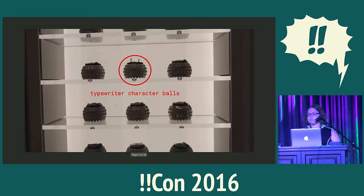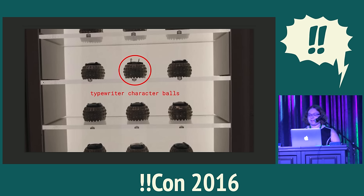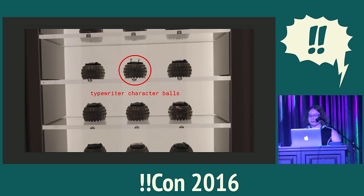We didn't always have zero-width joiners because we didn't always have computers. With typewriters, if you want to combine two characters, you type a character, you hit backspace, and then you type the second character on top of the first one. If you want to write in two different scripts, you have to switch out the ball inside the typewriter that has the characters engraved on it — I have a bunch of those in this picture from the New York Historical Society.